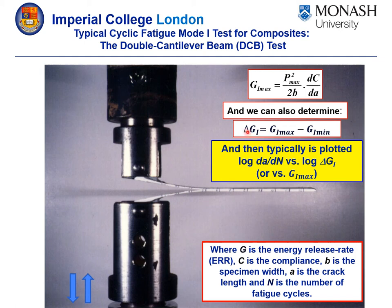The range of the energy release rate is given by this equation. When we use this type of plotting routine of log dA/dN versus the log range of G, we do get results which sometimes give us strange predictions, particularly with respect to the effect of an R ratio. Also, and most importantly, we have seen that the results we get from such tests can often give a very wide range of scatter.